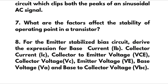For the emitter-stabilized bias circuit, derive the expression for base current, collector current, collector-to-emitter voltage, collector voltage, emitter voltage, base voltage, and base-to-collector voltage. You have to derive the expressions for all these parameters. This is all about the super important questions of this subject.